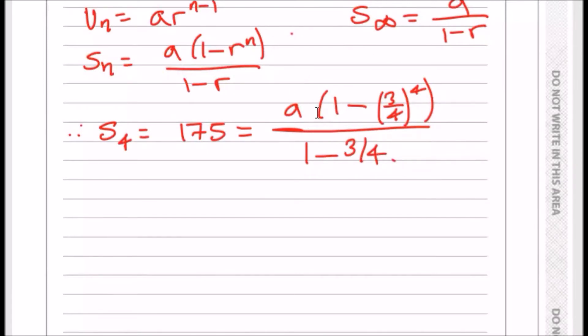So to make your life easy, I mean, you could go ahead and solve this, but I would just divide it all across. So I want to make a the subject. Making a the subject, we're effectively going to have 175 over everything you see here, which is one minus three quarters to the power of four, all over one minus three quarters. So make sure you put all of this in the calculator exactly as you see it.